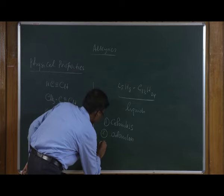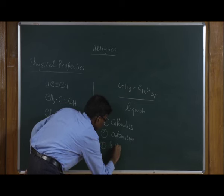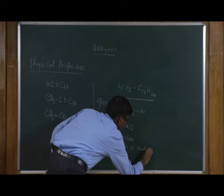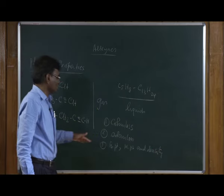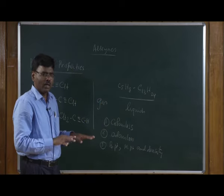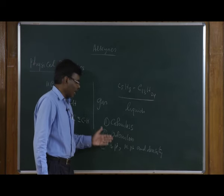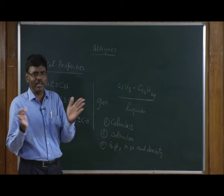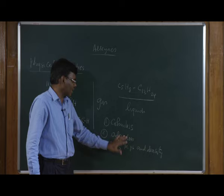Melting point, boiling point, and density all increase with increasing molecular weight, as seen with the homologous series of alkanes and alkenes. Comparing alkynes with alkenes, alkynes show higher boiling and melting points because they are linear molecules that can stack together more easily than alkenes.